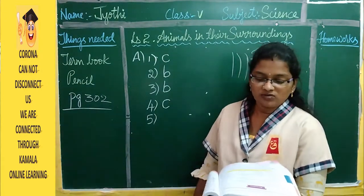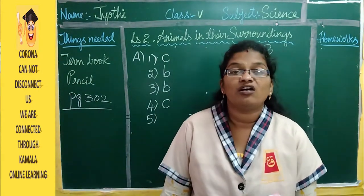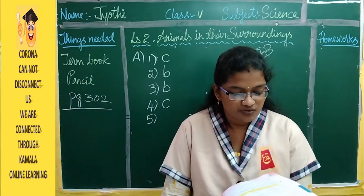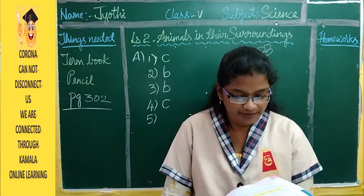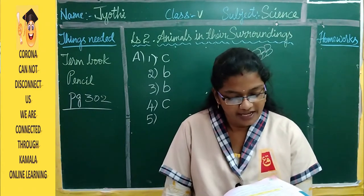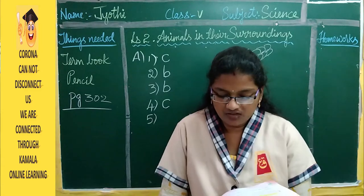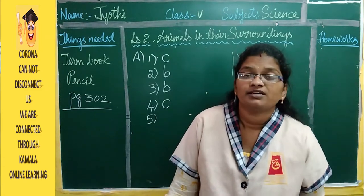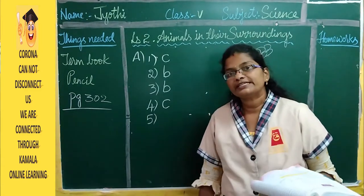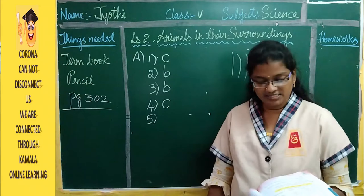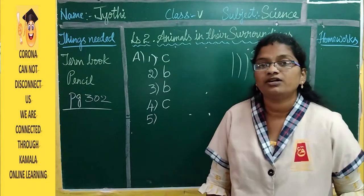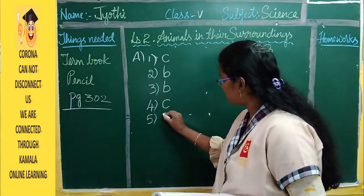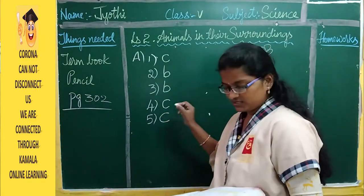Question: Mouse is an example of which category — reptile, amphibian, rodent, or arboreal animal? Mice and squirrels are rodents. So the answer is option C — rodent.